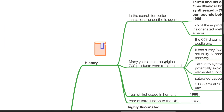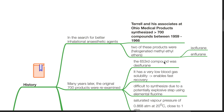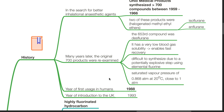History. In search for better inhalational anesthetic agents, Terrell and his associates at Ohio Medical Products synthesized more than 700 compounds between 1959 and 1966. Two of these products were halogenated methyl ethyl ethers: isoflurane and enflurane. Many years later, the original 700 products were re-examined. The 653rd compound was desflurane.